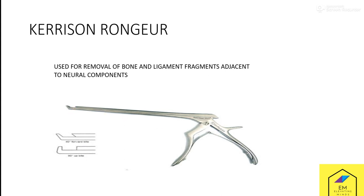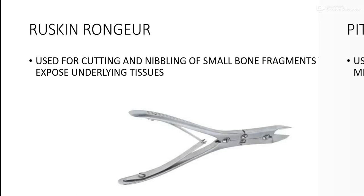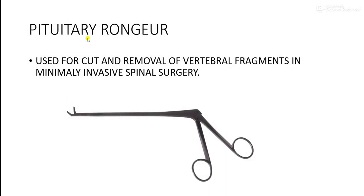The next instrument is the Ruskin rongeur. This instrument is used for cutting and nibbling of small bone fragments to expose underlying tissue — here you can see it has sharp tips. Next is the pituitary rongeur, which is used for cutting and removal of vertebral disc fragments in minimally invasive spinal surgery.